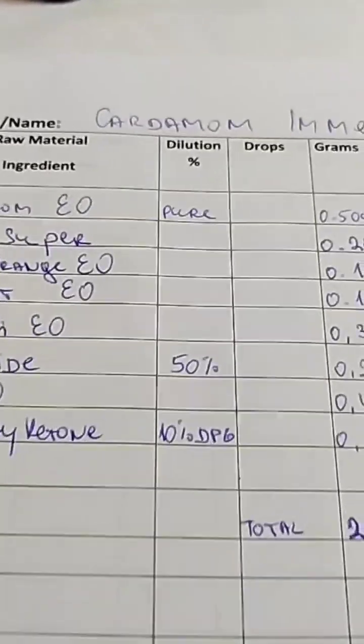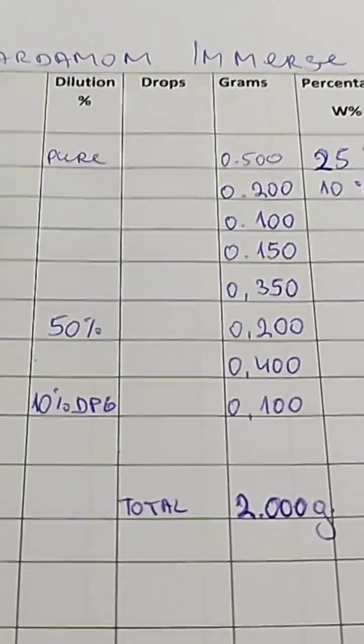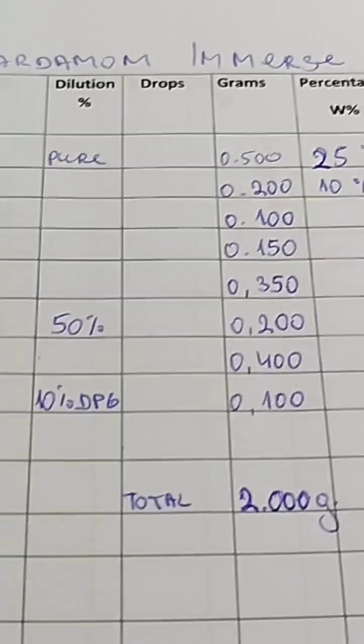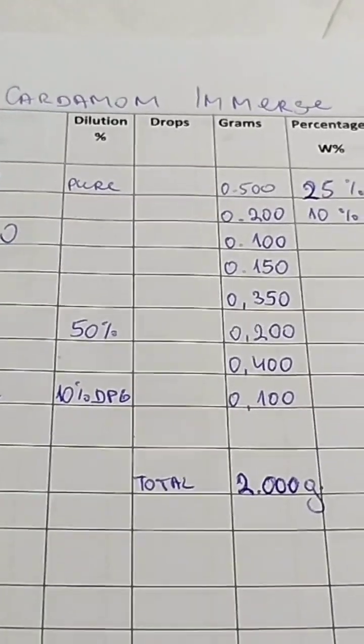When you start in the beginning, you write your formula. This is my demo formula here. As you can see, I wrote my formula and the total weight is two grams. When you do your experimentation in the beginning, your total weight will be a small amount.